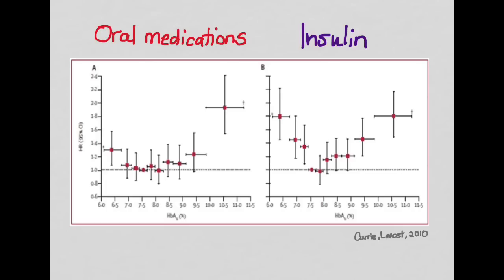And then he followed those people. He looked over the course of his study between 1986 and 2008 to see whether or not those patients died and what their A1C was. And he wanted to see the relationship between A1C and mortality.